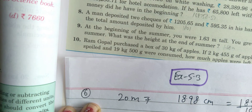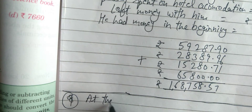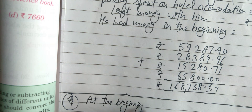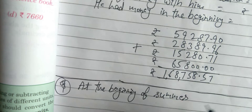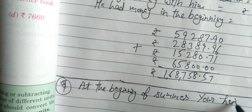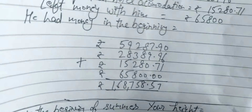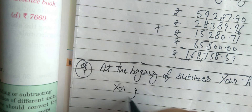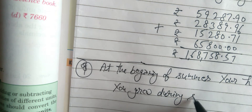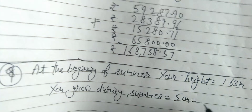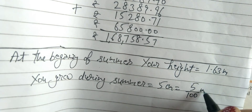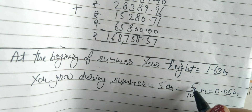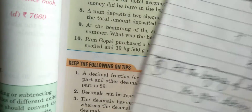Question number 9: At the beginning of the summer, you were 1.63 meter tall. 9th question में: at the beginning of summer — जब summer की छुट्टियां start हुईं — your height 1.63 meter थी। You grew during summer — यानि summer में तुम्हारी height बढ़ी — 5 centimeter। अब ये centimeter में है और ये meter में है। Centimeter को meter में convert करने के लिए 5 ÷ 100 = 0.05 meter।